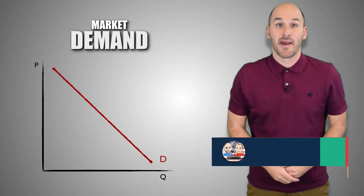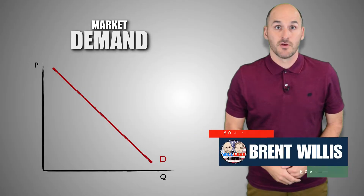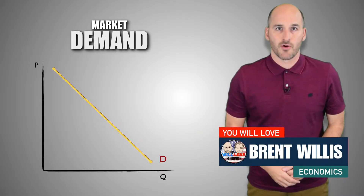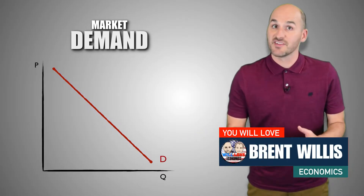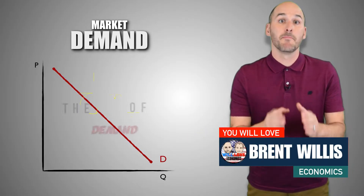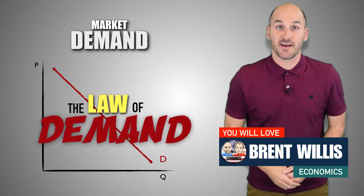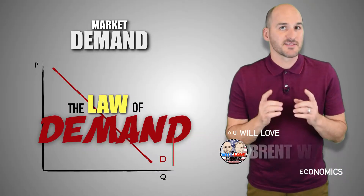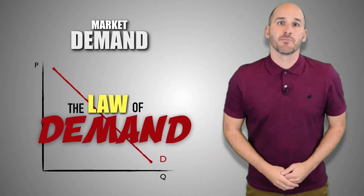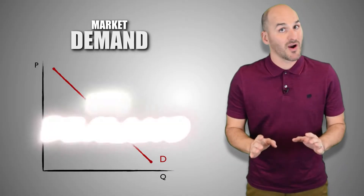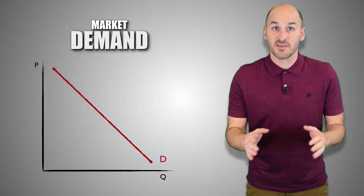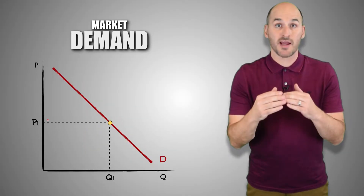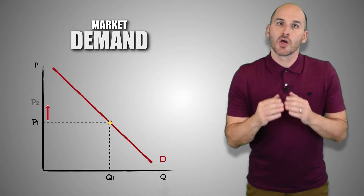This is the demand curve. Notice that it's a downward sloping curve. This is because the law of demand is in effect. The law of demand states that the relationship between price level and quantity demanded is inverse.